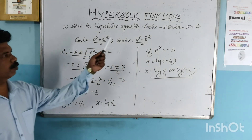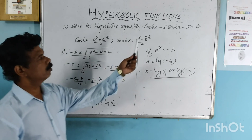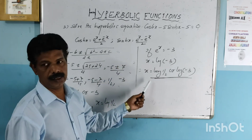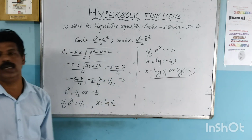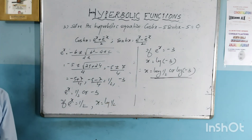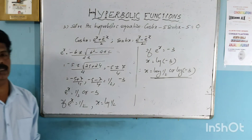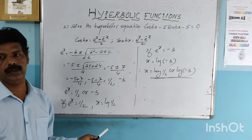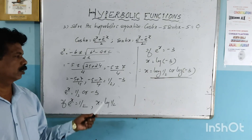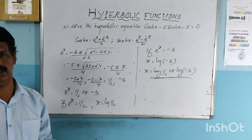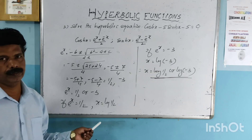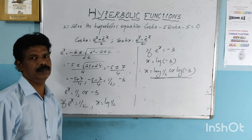Solving this hyperbolic equation gives x equals log of one half or x equals log of minus 3. That concludes this topic. We will continue in the next video. Bye.